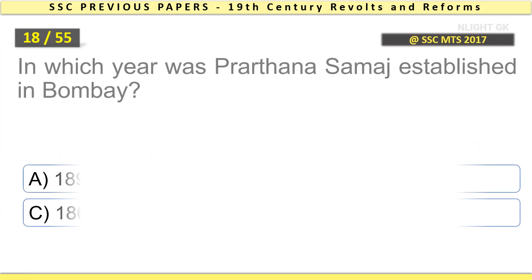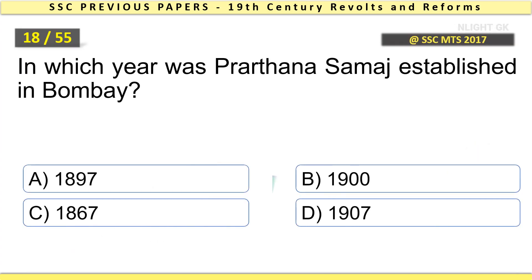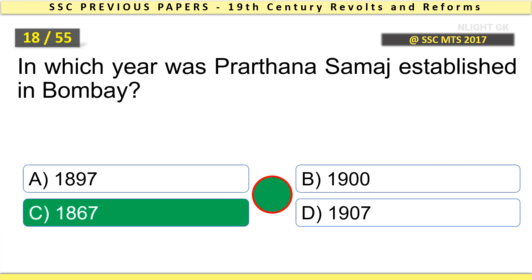In which year was the Prarthana Samaj established in Bombay? In 1867. Also, Sati was prohibited by Lord William Bentinck.